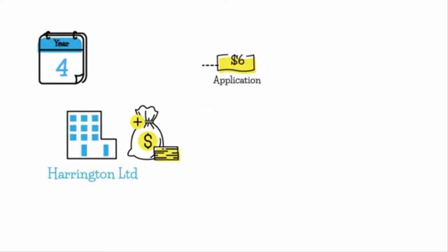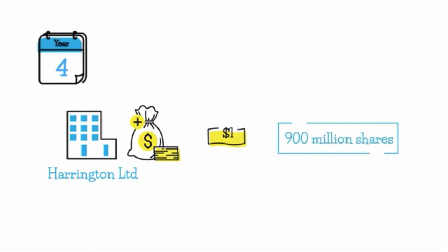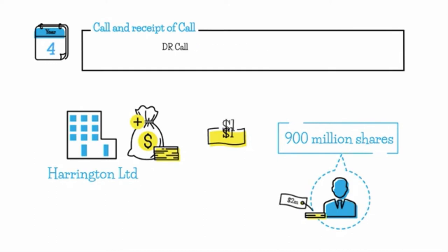In year four, Harrington Limited's directors believe extra funding is required for the bullet train project. They resolve to make a call on the remaining $1 per share on the 900 million shares previously issued to the general public. The first journal entry is for the amount owed by the shareholders. We debit the call account — a contra equity, debit-natured account representing the shareholders' obligation to pay. That's $1 times 900 million shares, so we debit call $900 million and credit share capital $900 million.